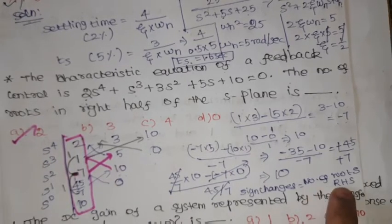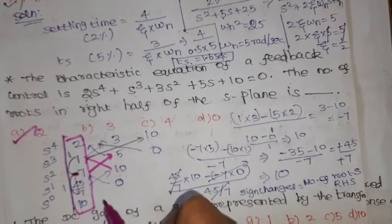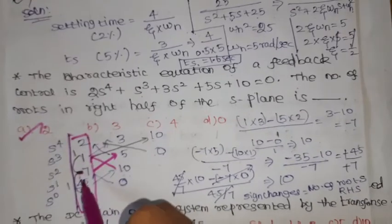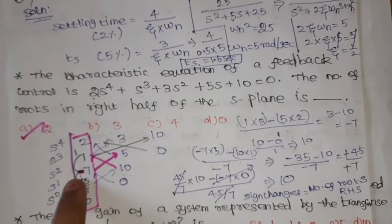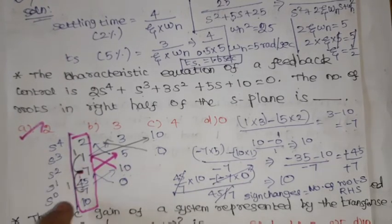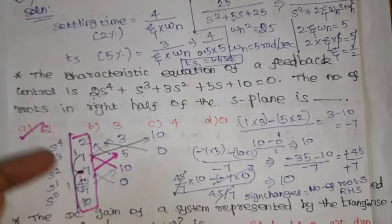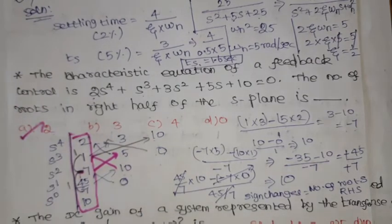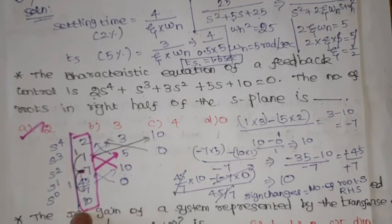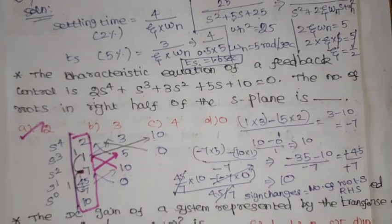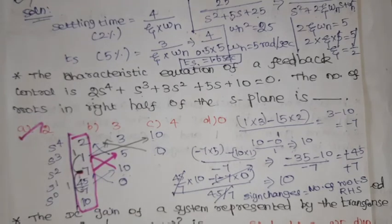A common mistake is to count the sign changes incorrectly — for example, seeing a positive, then a negative, then a positive and counting only one sign change. Be careful: positive to negative is one sign change, and then negative to positive is another sign change, giving two sign changes total. Always check the first column from top to bottom carefully. So the answer is two roots in the right of the s-plane — option A2.